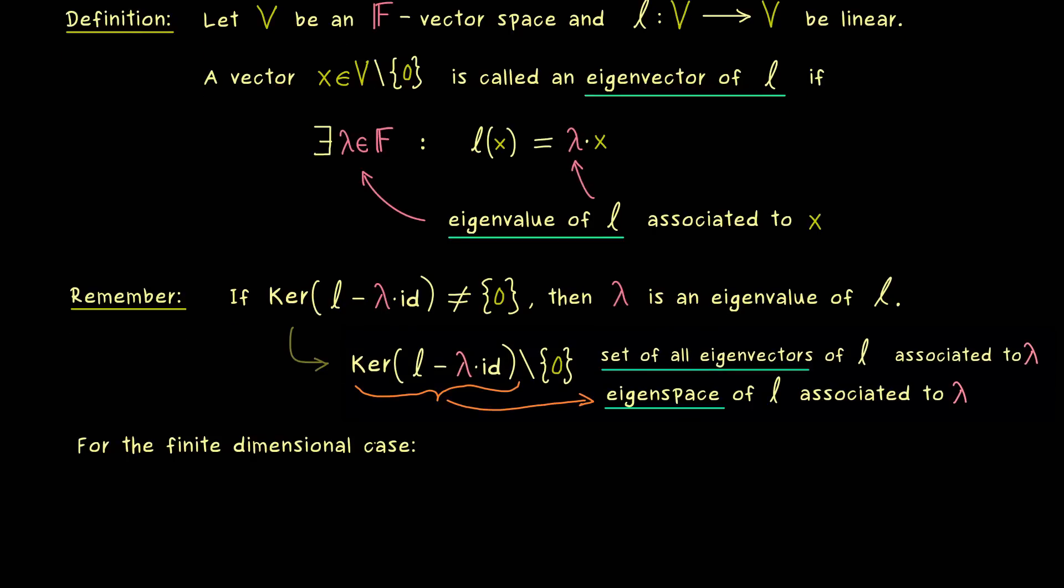And moreover we already know how to calculate these kernels for the finite dimensional case. There we have the advantage that we can always choose a basis of V with n vectors in it. And then we know that the matrix representation of l minus lambda times the identity with respect to the basis B is given by the matrix representation of l minus lambda times the identity matrix.